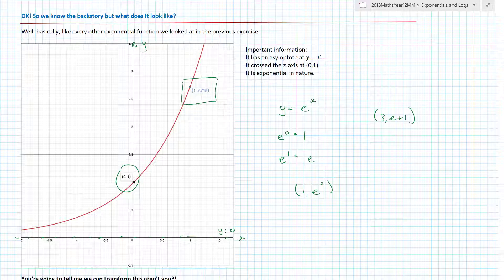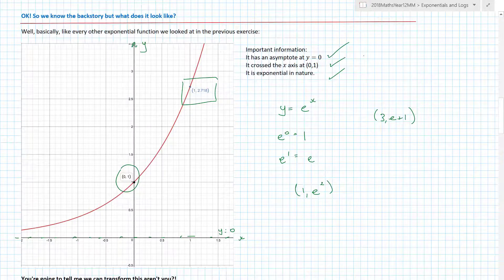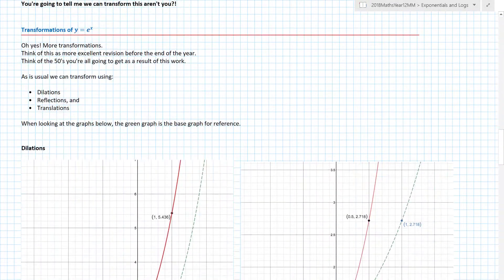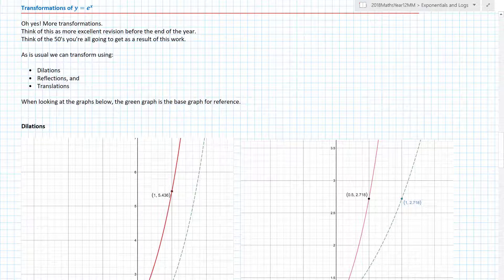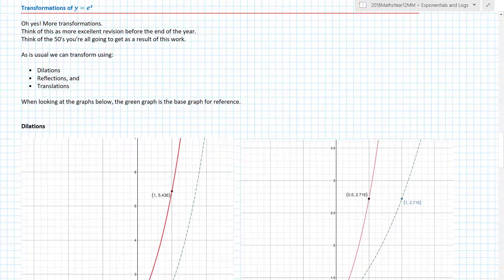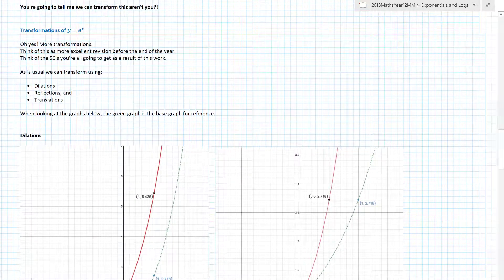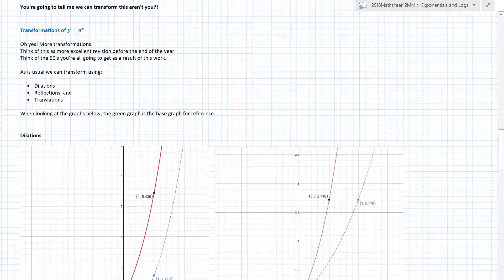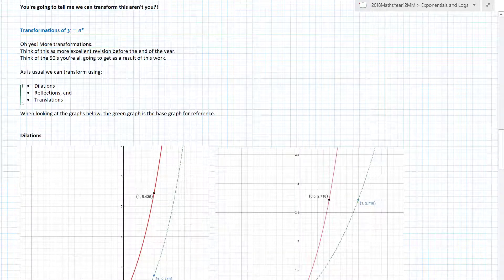So important information: asymptote, crosses the y-axis, is exponential in nature. And I'm going to say to you yes we can transform this. And again it's no different from all the transformations we've done before, so I'm not going to spend too long talking about it. More transformations - unless they tell you otherwise, you have to do dilations, reflections, and translations.